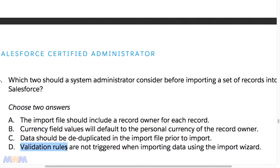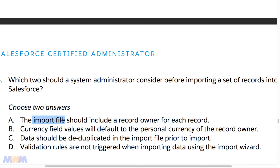So D is incorrect. As for best practices and things to consider: if you want to specify a record owner for each record, you need to include that in the import file. Otherwise the record will be owned by you as the importer. So A is one of the correct answers. For example, if you want to specify who an account owner or opportunity owner is, and you don't specify that for individual users, those records will default to being owned by you.